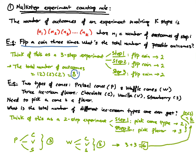You get the same answer using the formula and listing the outcomes. In this video we talked about why we need to know how to count in order to do probability, and I introduced the first counting rule: the multi-step experiment counting rule. We looked at a couple of examples and showed that the formula works. One extra note: the textbook and other books may have different names for this counting rule, but the idea is the same.